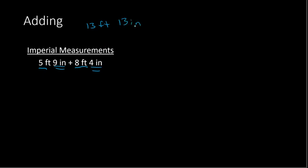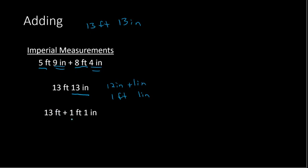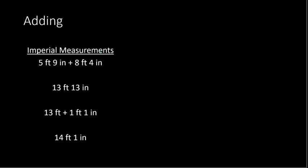So 9 inches plus 4 inches gives you 13 inches. So we have 13 feet and 13 inches, but you always want to simplify your answer. Here, 13 inches is more than a foot — there are 12 inches in a foot. So 13 inches is 12 inches plus 1 inch, which means 1 foot and 1 inch. So we have 13 feet plus 1 foot 1 inch, giving us 14 feet 1 inch as our final simplified answer.